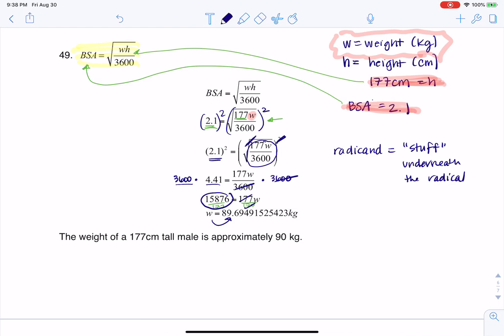And then I just rounded it to the nearest kilogram because that was what the direction said. If you look at the directions in 49, it said find the weight to the nearest kilogram. So here's the exact weight, but because this is a six, I'm going to round this up to 90 kilograms. So there's number 49. Thanks so much. Bye.